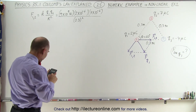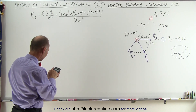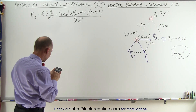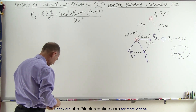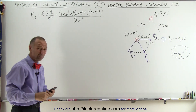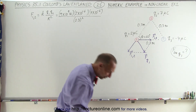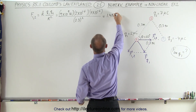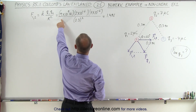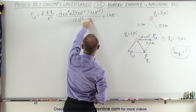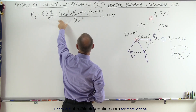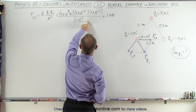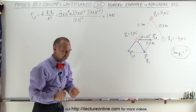So what is the magnitude of that? 9e9 times 2e-6 times 7e-6 divided by 0.3 squared. That's going to be 1.4. I'll just say that's equal to 1.4 Newtons. Let's quickly check the order of magnitude: 9 times 18 gives 14, times 20 divided by 0.09 — that's 10 to the 11th minus 12, giving 1.4. That looks good.